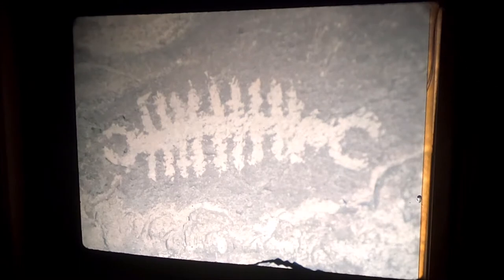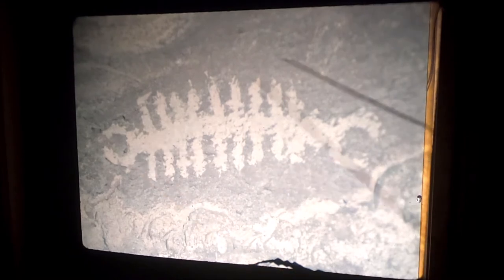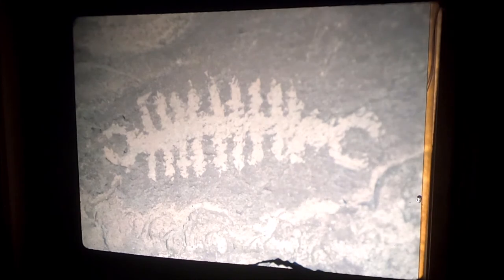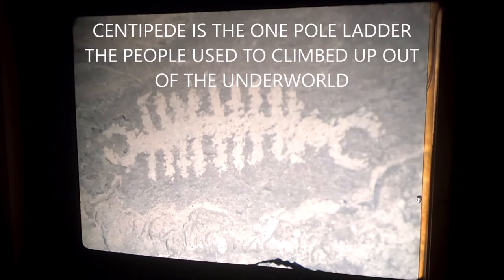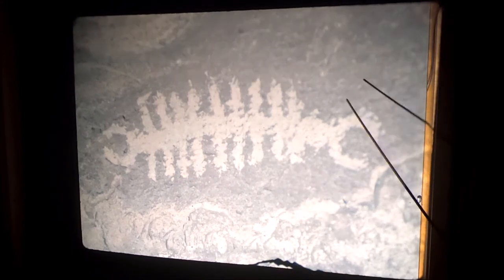Another nice centipede — two, four, six, eight. This has nine. Centipedes are the one pole ladder that the people climbed up to come up out of the underworld. And also if you're dying, a lot of times you'll see a figure that's dying and it'll have a centipede in his hand.